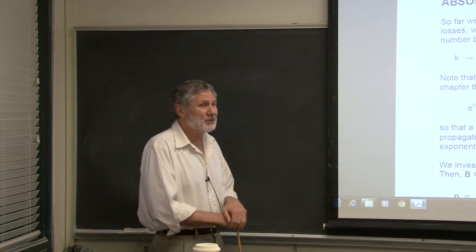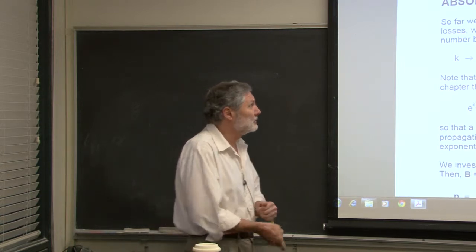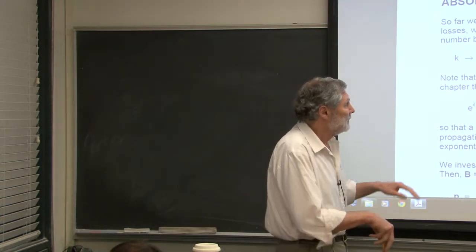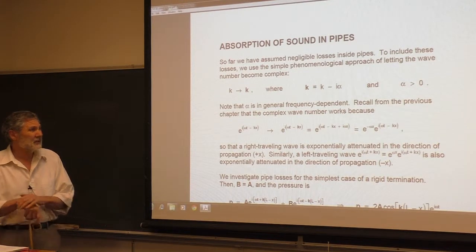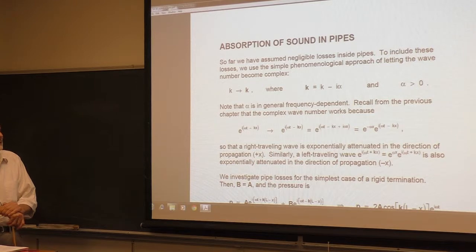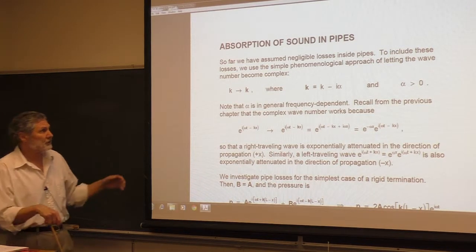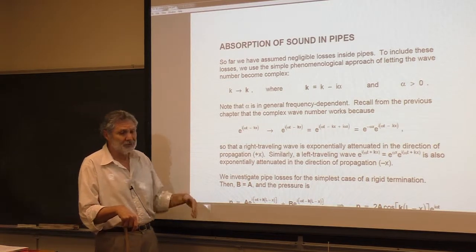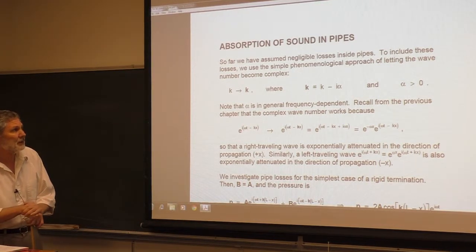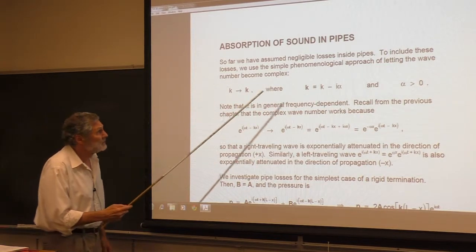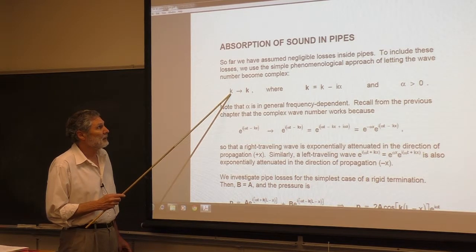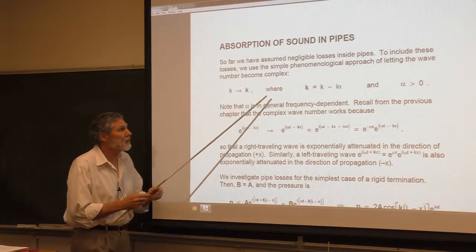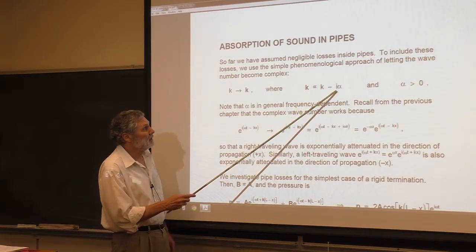We're going to approach this phenomenologically — we're just going to mathematically put in some attenuation. I'll comment later where it can come from, but this approach of just getting in there is the simplest way to proceed. We can do this by letting the wave number become complex with a negative imaginary part.